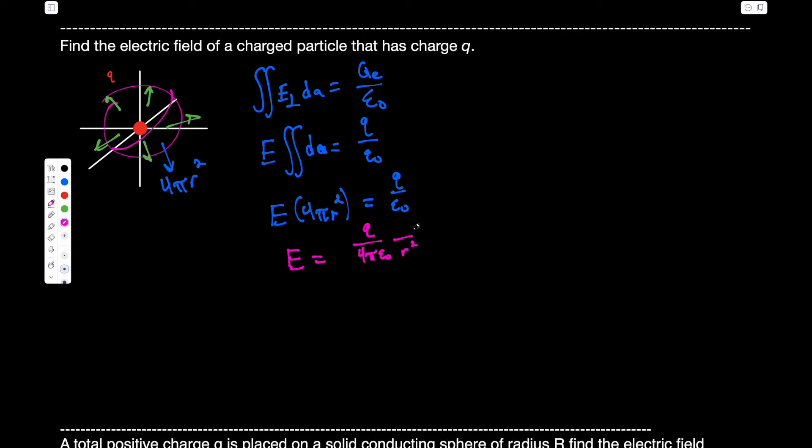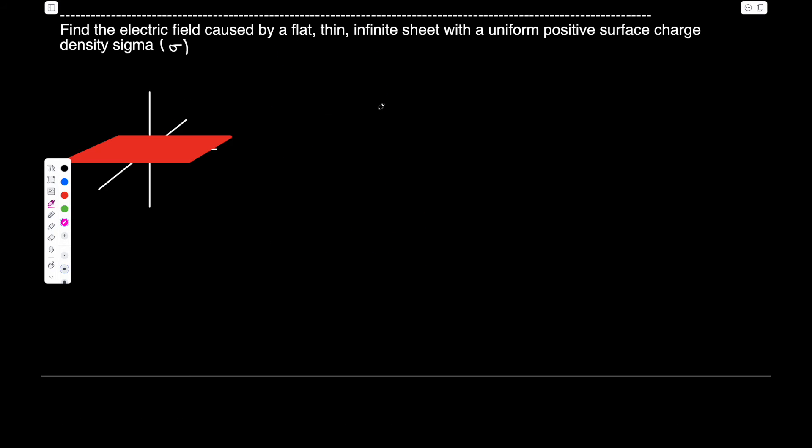So this is going to be E times 4 pi r squared is equal to Q over epsilon naught. And now we'll do E is equal to Q over 4 pi epsilon naught r squared. And we want this to be a vector, because the electric field has direction. So this is basically the electric field for a point charge. But we see it's radially outward, right? It's all directions equally radially outward from the origin. So that's what this r hat's saying. That's the direction.